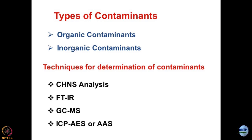We have discussed different techniques in the previous lecture. To reiterate: normally a CHNS analyzer — that is the carbon, hydrogen, nitrogen, and sulfur analyzer — is required. It helps in finding out the CHNS components of geomaterials and detecting what alterations these elements are going through in the process of soil contamination. FTIR — Fourier transform infrared spectroscopy — was discussed in the previous lecture, followed by GCMS (gas chromatography with mass spectroscopy), and of course ICP-AES.